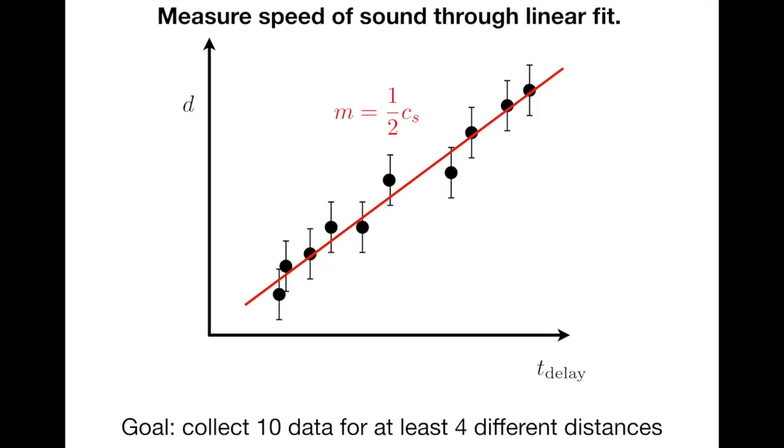And we'll use this relationship in the context of a linear regression. What we'll do is we'll measure several different distances and delay times. We'll gather at least 10 separate data at four different distances. And if we plot the distance of the wall on the vertical axis and the delay time on the horizontal axis, we can then go ahead and carry out a linear fit where the slope of that line is going to be half the speed of sound.